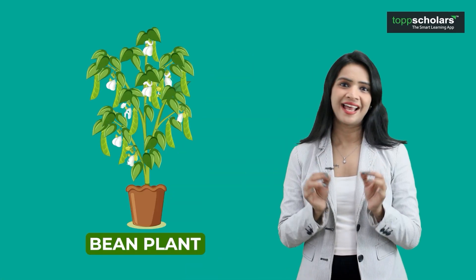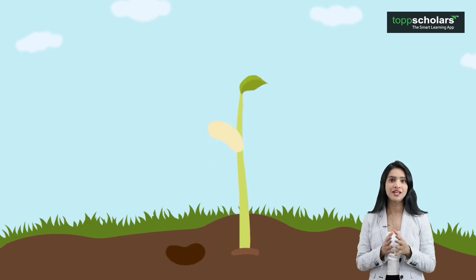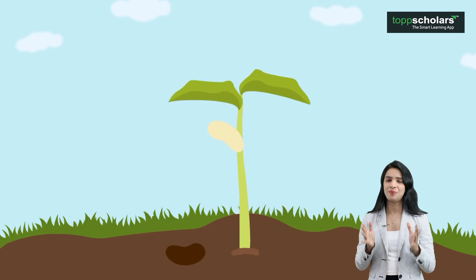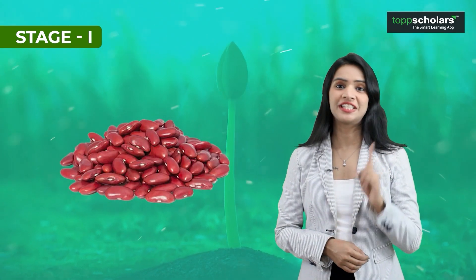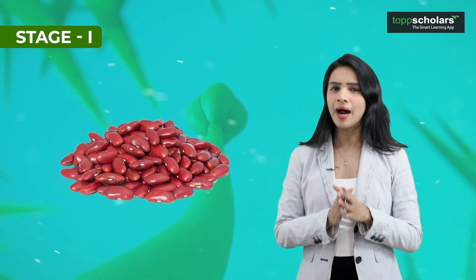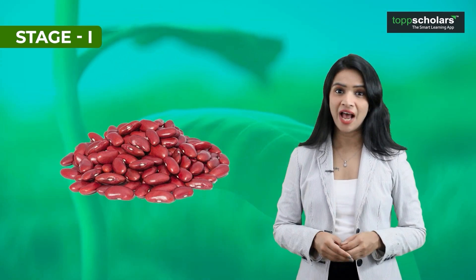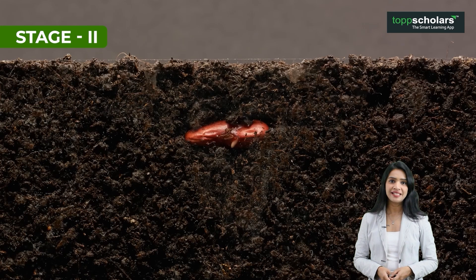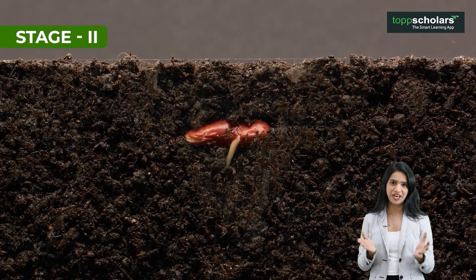To make things simpler, we will use the bean plant as our example. It is easy to grow and a perfect model for understanding how plants develop from a tiny seed into a full grown plant. The life cycle of a bean plant begins with the seed, which is Stage 1. Look at this seed — it might look small and lifeless, but don't get confused. This seed houses everything a plant needs to start growing. When the seed is placed in moist soil and gets the right amount of warmth, it begins to change.